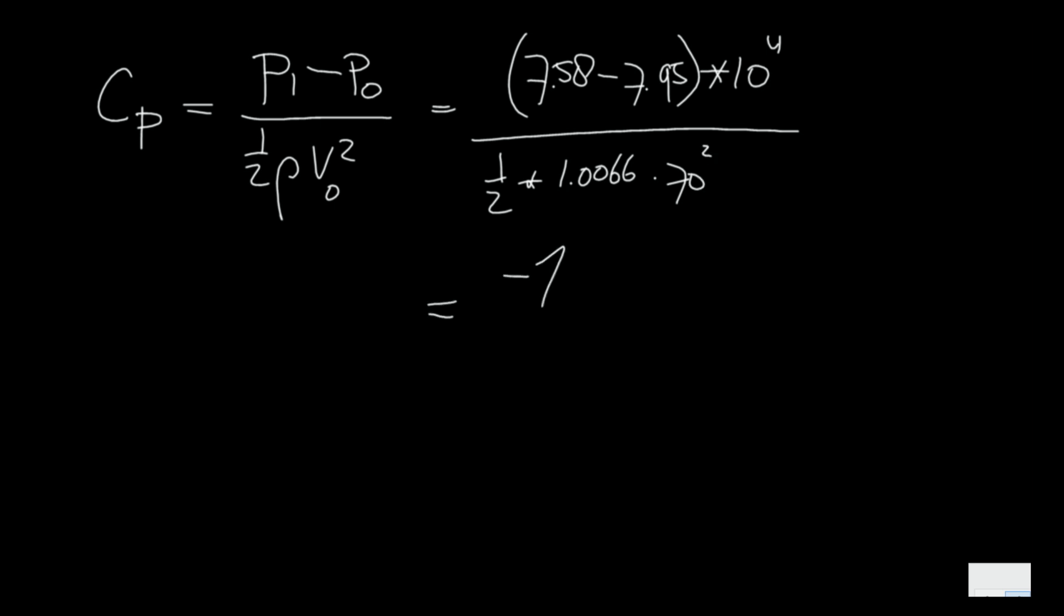Now if we write down the definition of Cp, Cp is p1 minus p0 divided by a half rho v0 squared, then we have 7.58 minus 7.95 times 10 to the 4th divided by a half times rho times 70 squared. And this is minus 1.5, so it is at the suction side of the airfoil.